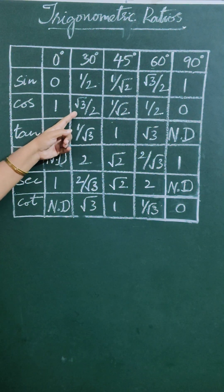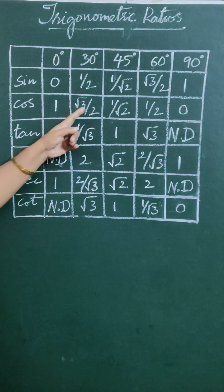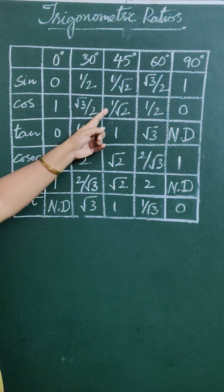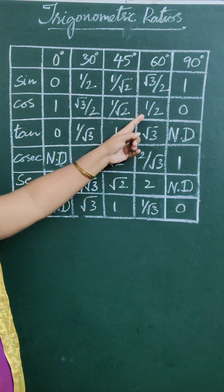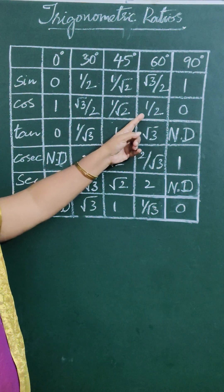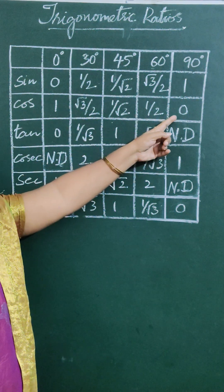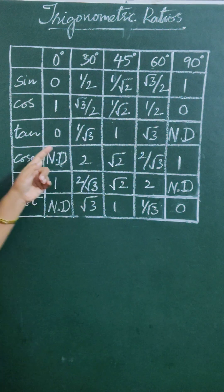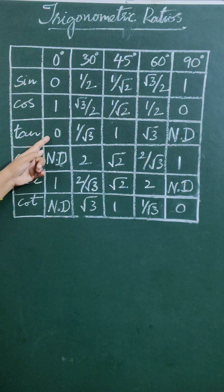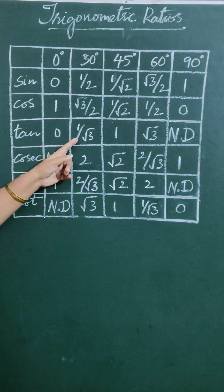cos 0° = 1, cos 30° = √3/2, cos 45° = 1/√2, cos 60° = 1/2, cos 90° = 0.